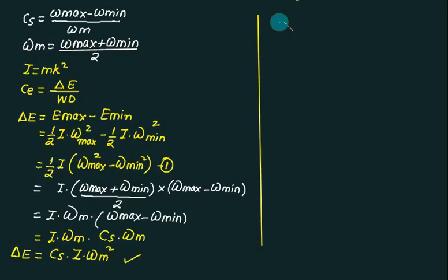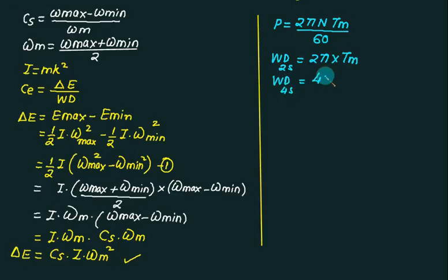The supporting equation is power equals to 2 pi N multiplied by Tm divided by 60. In case of 2 stroke is 2 pi multiplied by Tm. So the work done for 4 stroke is 4 pi multiplied by Tm.